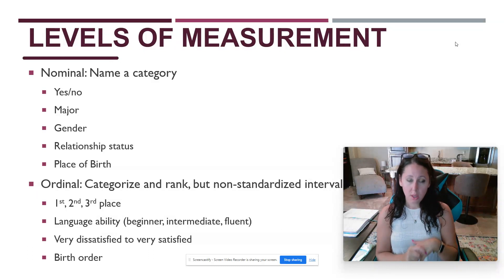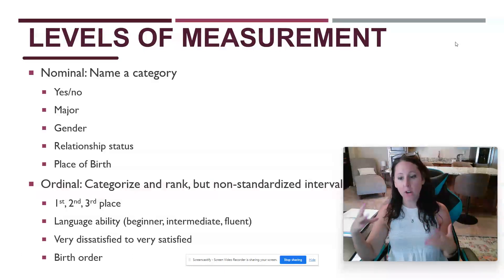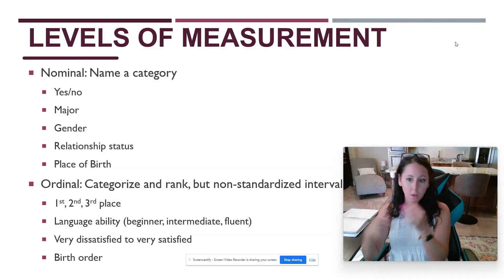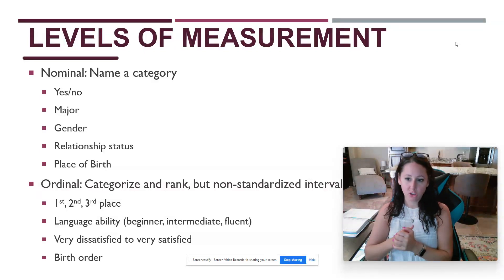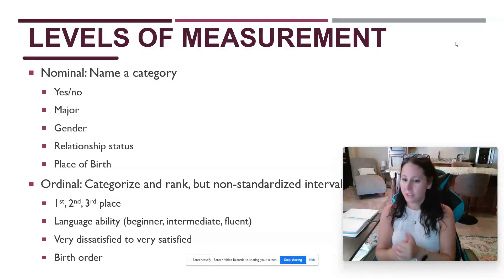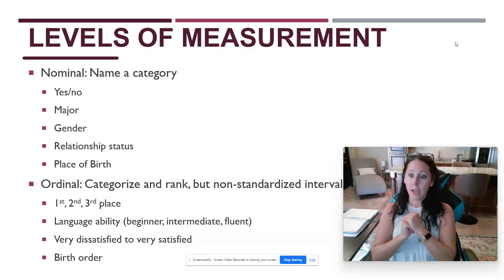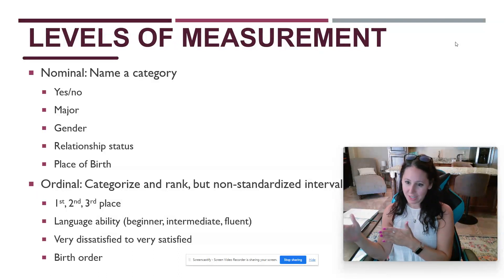An ordinal level of measurement is one where I can categorize and rank items, but the intervals won't necessarily be standardized. For example, first, second, and third place in a competition — if I'm looking at a track meet, there is no standardization. The person who came in first place wasn't necessarily five seconds faster than second place, who was five seconds faster than third place. It's not standardized. I can tell you who got first, second, and third, but I can't give any significance to what those categories mean or what that order means.